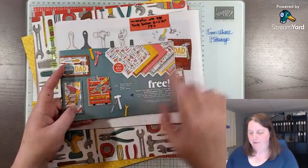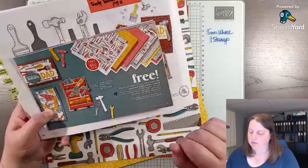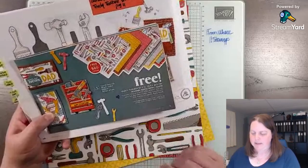And at first I wasn't sure about the colors because it was basic black, copper clay, crushed curry, gray granite. Oh no, it's not real red. It's poppy parade, I apologize. So basic black, copper clay, crushed curry, gray granite, lost lagoon and poppy parade. So those are the colors in the paper.